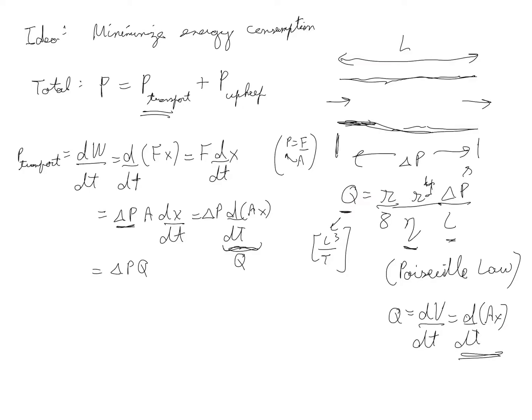So we have this expression for P transport. Let me get rid of delta P and write everything in terms of Q. So I use Poiseuille law to eliminate delta P and so I get P transport is 8 over pi eta L Q squared divided by r to the power 4. This is P transport.